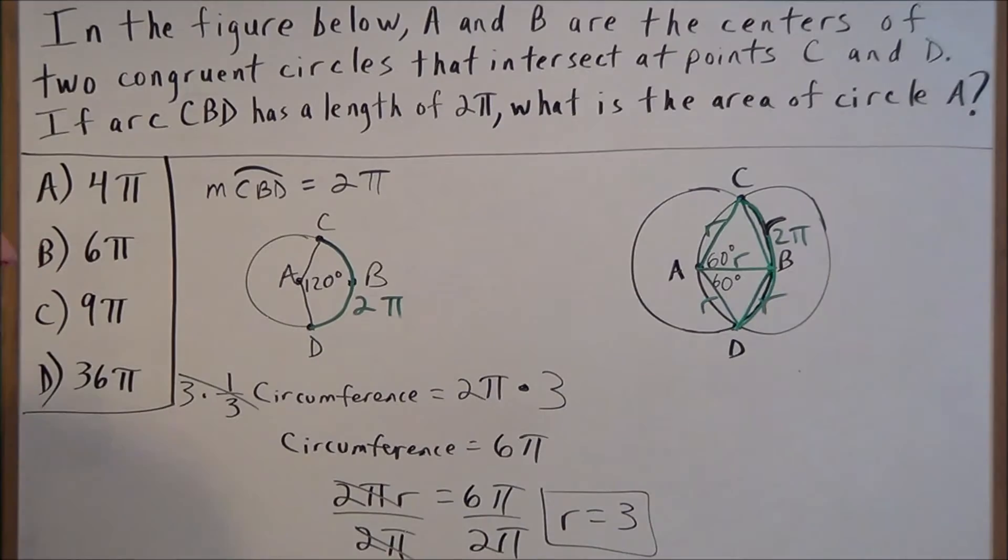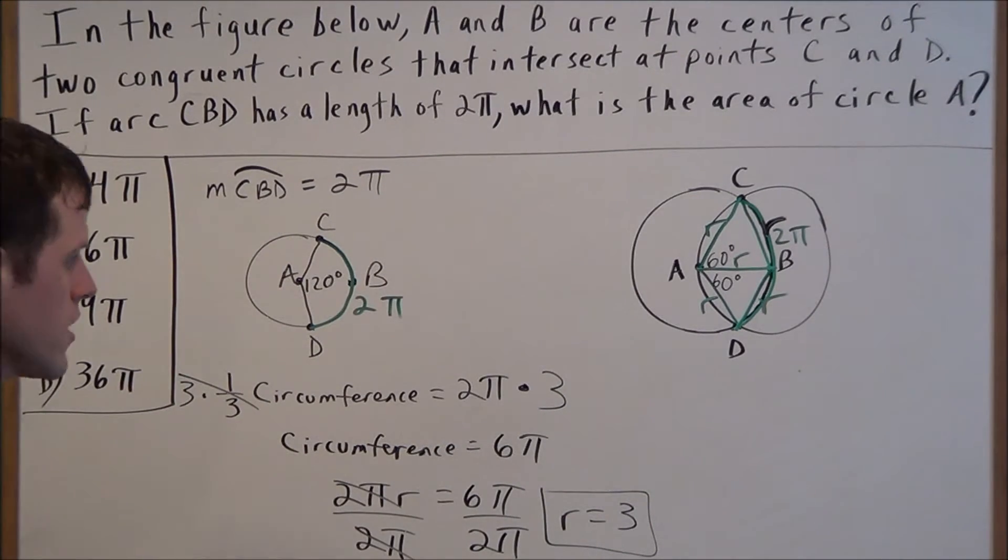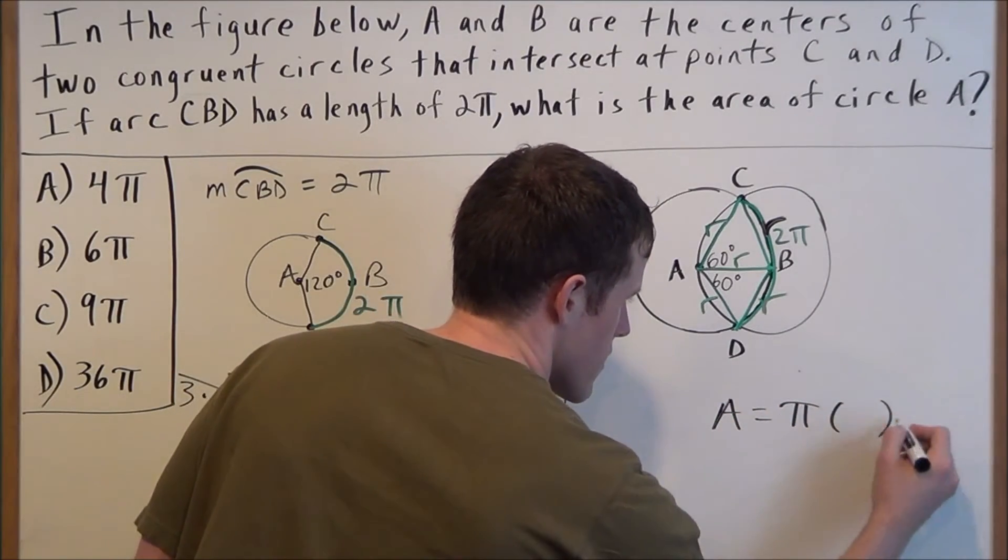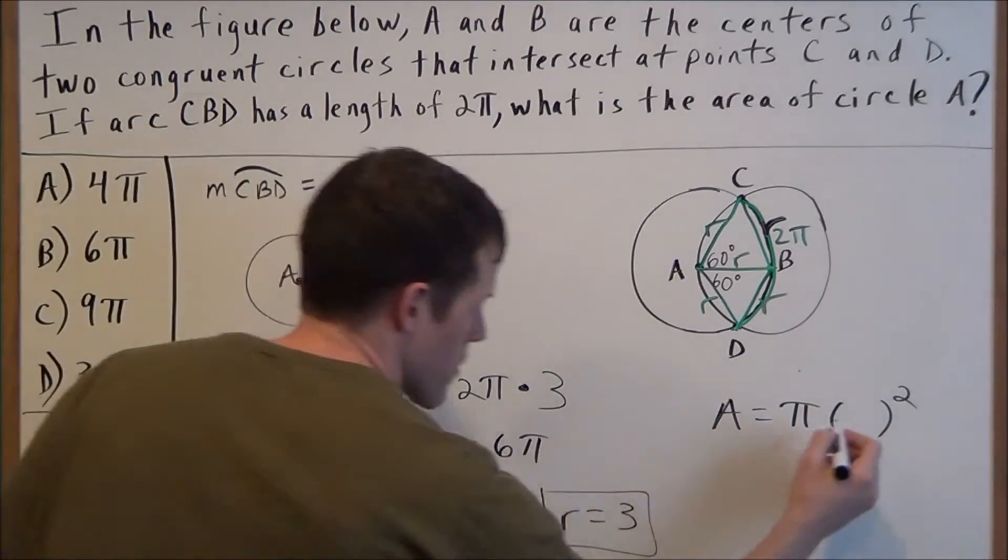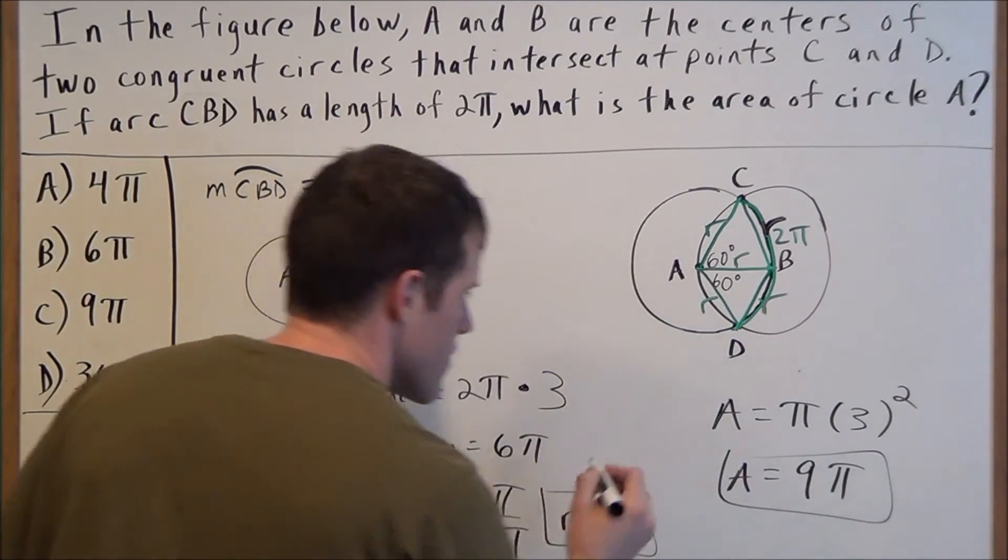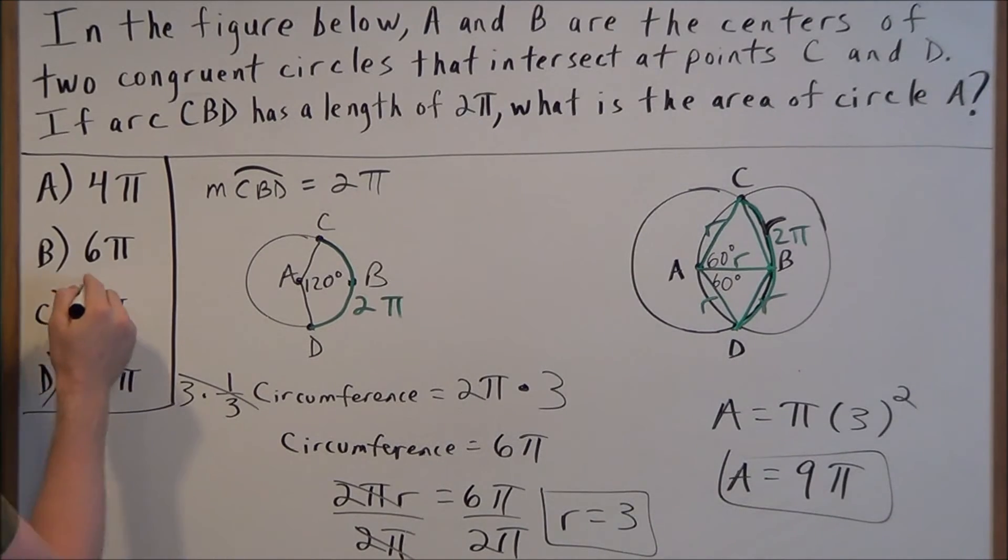Now this doesn't solve the problem for us, but we want to know what is the area of circle A. Now we just use the formula area equals π times the radius squared. We plug in 3, and then the area is equal to 9π. So our answer to this problem is option C.